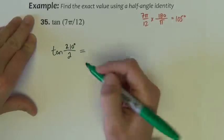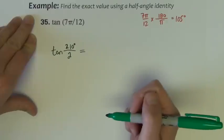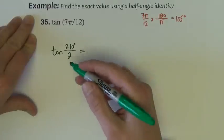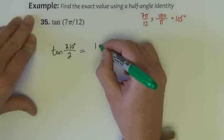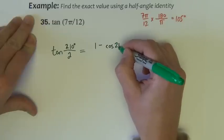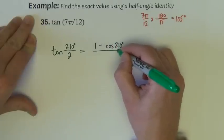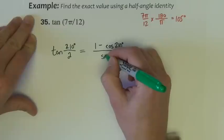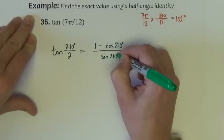Now, with the tangent, there are two formulas. You can use either one, it doesn't matter because they're equivalent to each other. So I'll just use the first one. It would be 1 minus cosine of 210 degrees over the sine 210 degrees.